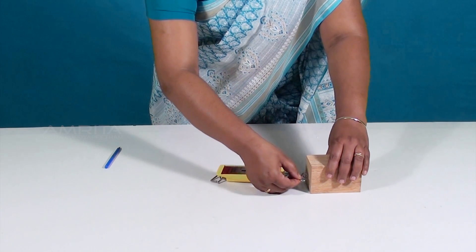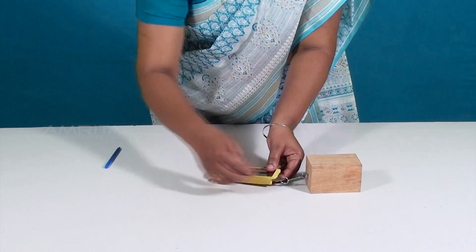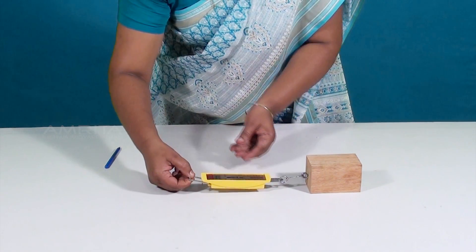Now fasten the spring balance to the block of wood, then pull the spring balance.